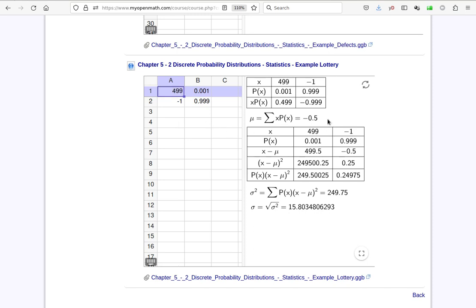We expect to lose, that is negative $0.50, each time this game is played. And here's the variance and standard deviation.